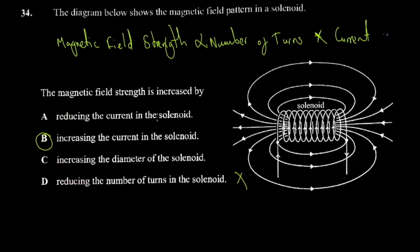Reducing the current in the solenoid - this one is not it. So we just go with B. If they said increasing the number of turns, that would also be a very good answer. So just know those two are the two factors that you adjust.